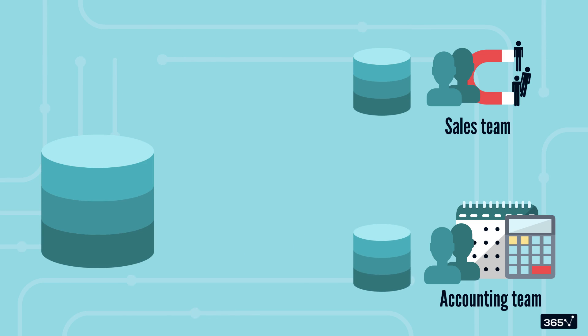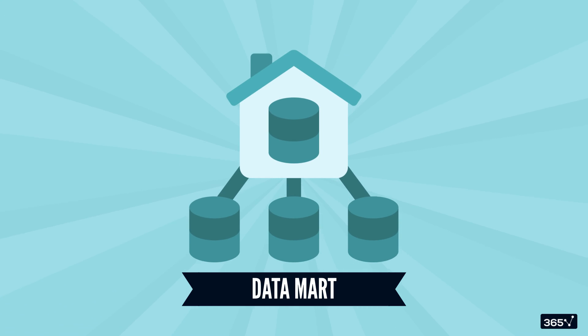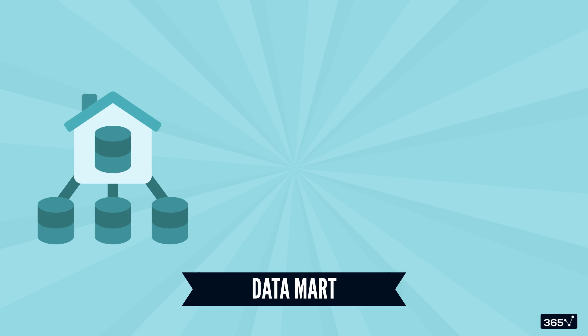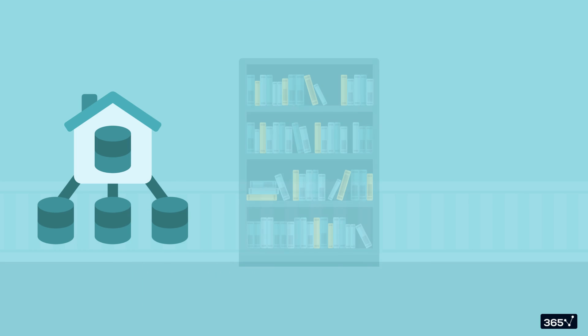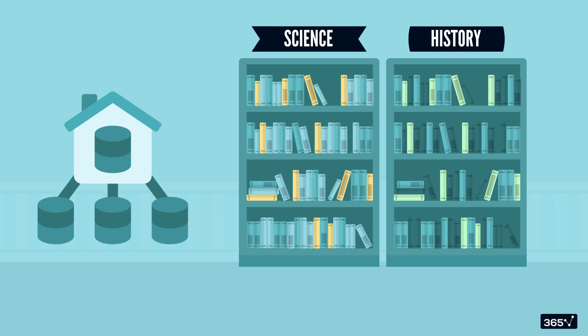These separate pockets of final data are data marts. You can think of data marts like a specialized section in a library—one for science, another for history. Each mart focuses on a different subject or department, such as sales or finance, making it easier for users to find relevant insights.